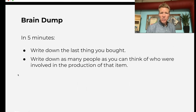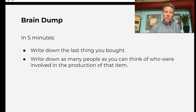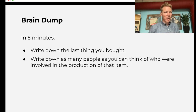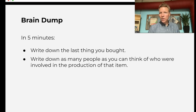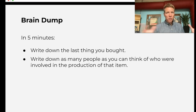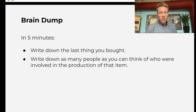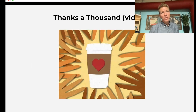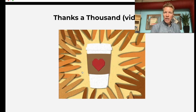Ask your students to do a brain dump: think about the last thing they bought and write down as many people as they can think of who were involved in the production of that item. Encourage them — whoever thinks of the most gets a prize. For example, if it's a Starbucks coffee, the government agency that provides the water, the trucks that brought the beans, the container ships — all of these people are involved in the production. It can be a very long list. There's a wonderful video — not produced by us — that goes through one person's story who tried to thank everybody involved in producing his morning cup of coffee.